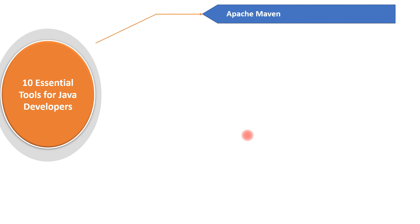The first tool is Apache Maven. Maven is one of the popular build tools — we can use Maven as a build tool for Java projects, for dependency management, and it offers a lot of plugins to perform different tasks. We can use Maven to run JUnit test cases and also deploy different artifacts like JAR and WAR files to the central repository, such as Nexus remote repositories.